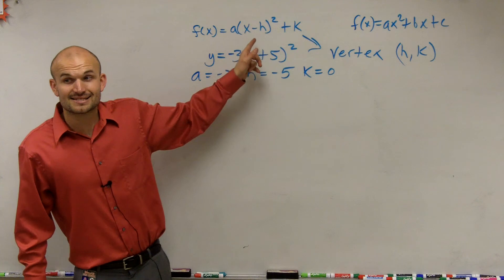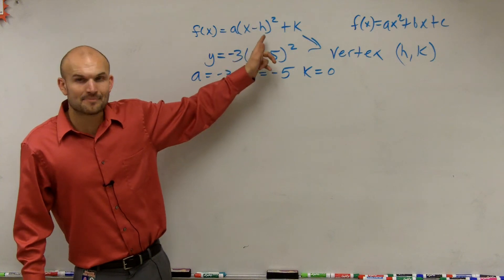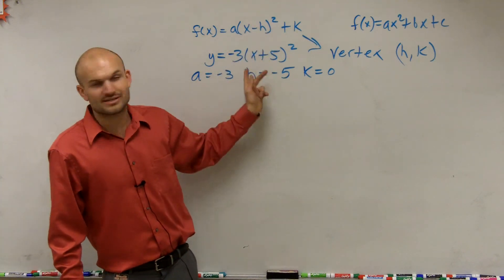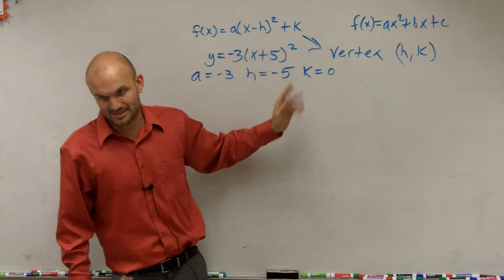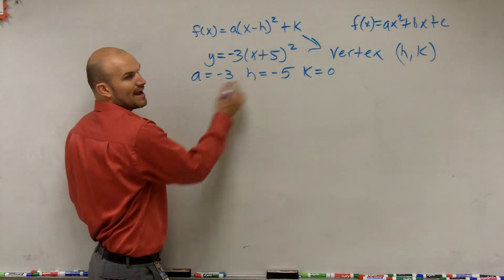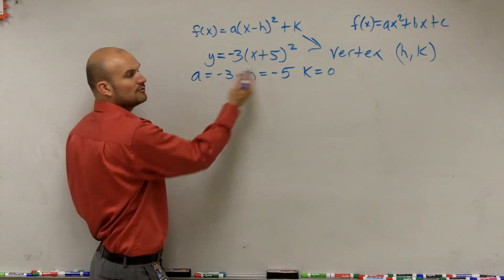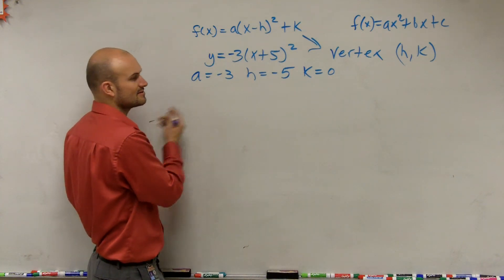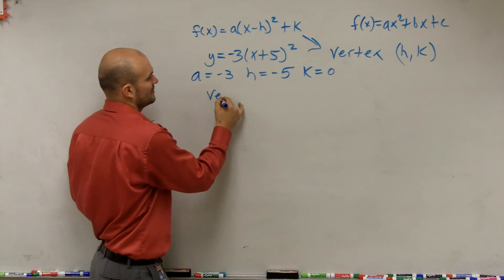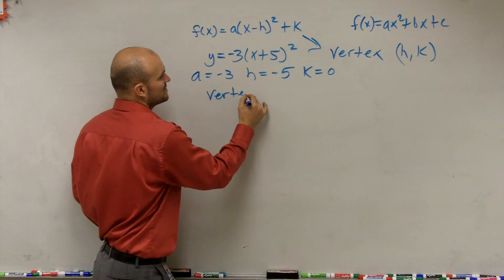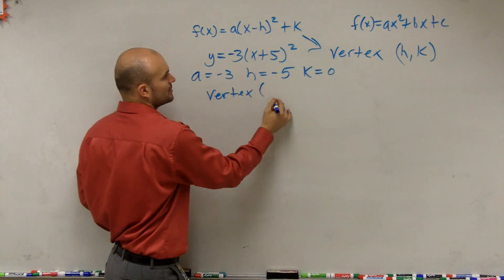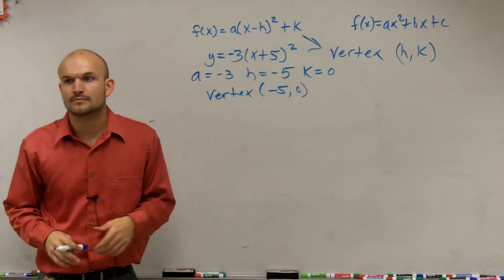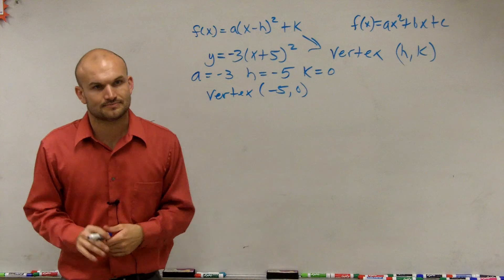So remember, it's x — opposite of h. You can see how we have this. Since we know h and k, do we know what the vertex is? Yeah. So for this problem on your homework, you can just say negative 5, 0. Done.